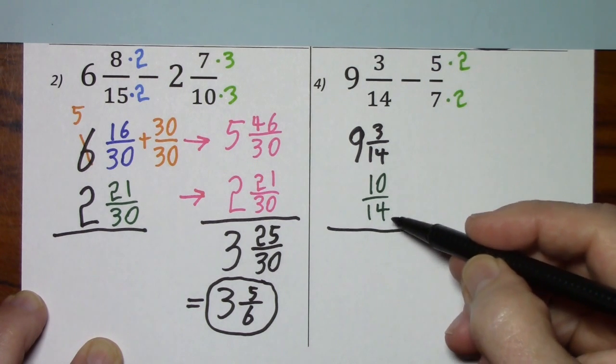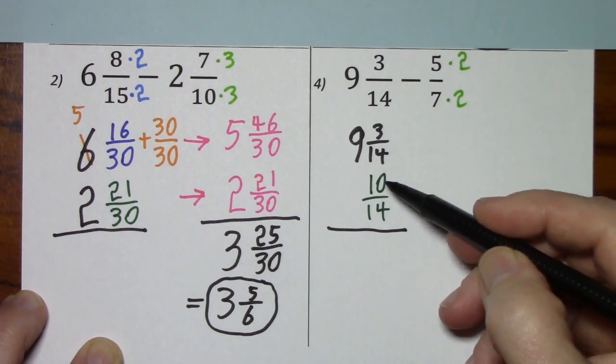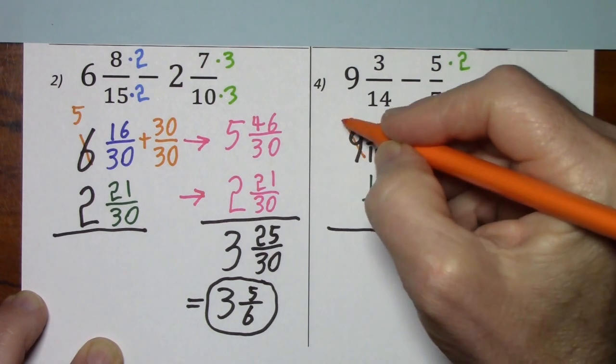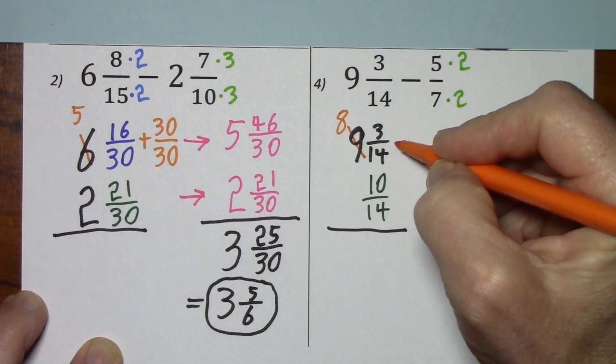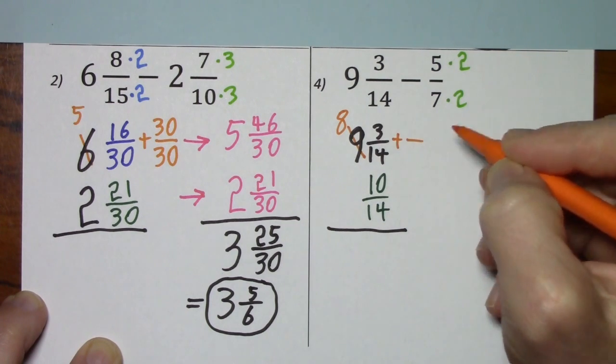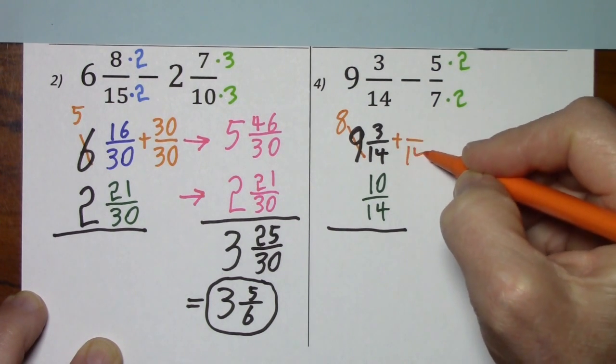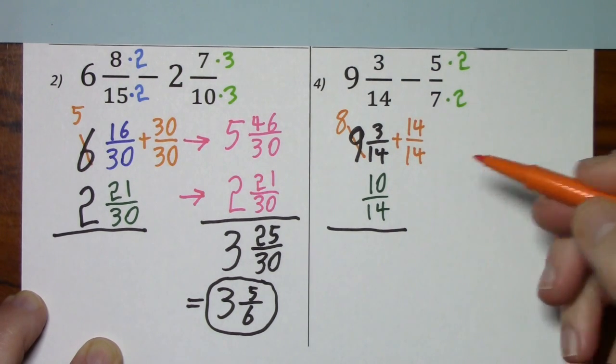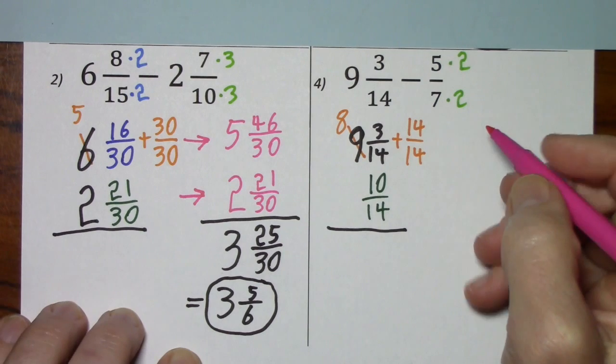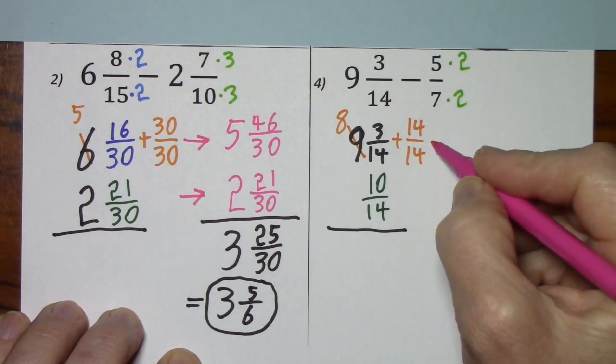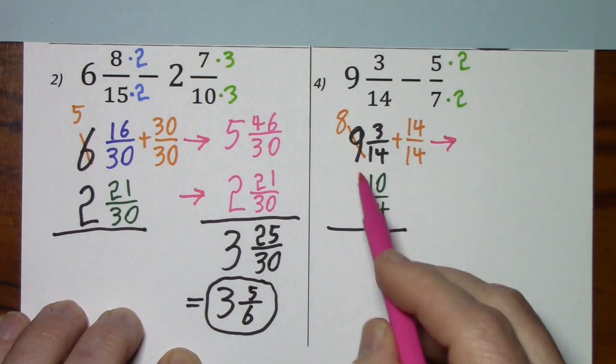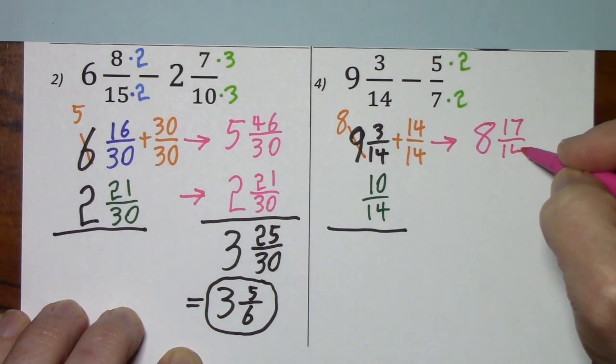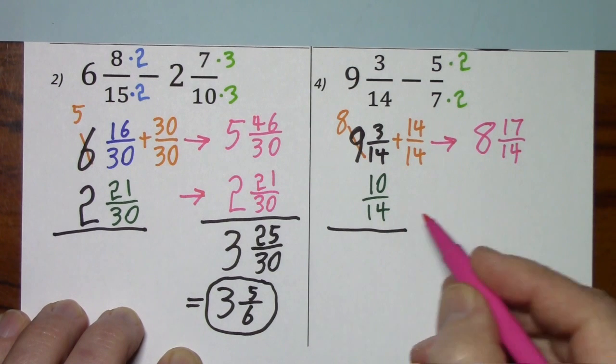Again, we want to subtract, but if you have 3, you can't take away 10. So, 9 becomes 8. We add 1 in the form of 14 over 14. And now we'll rewrite this. So, it's 8 and 17 fourteenths. And I'll just bring this over.